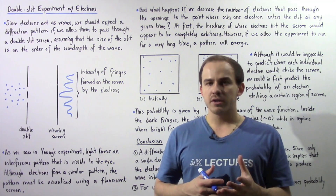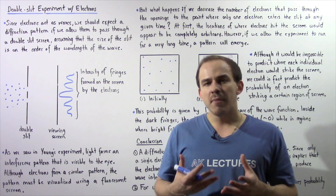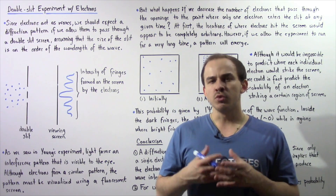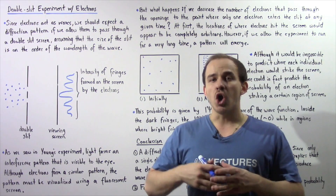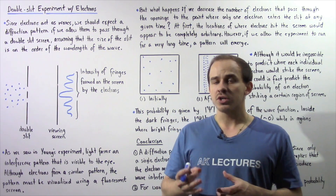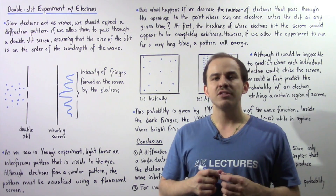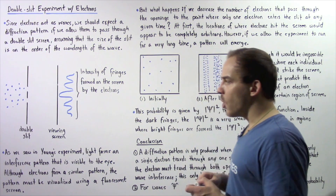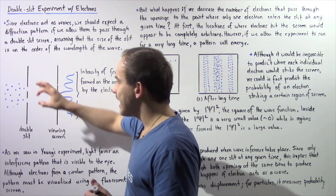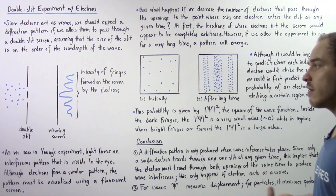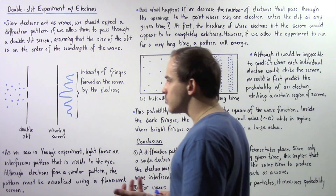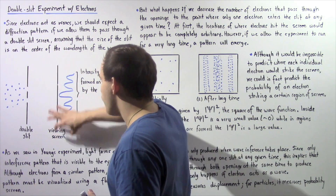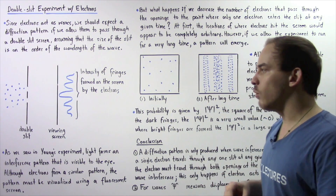Since electrons not only act as particles but can also act as waves, we might expect a diffraction pattern to be formed when electrons flow through a double-slit screen, as long as the size of the slit openings is on the order of the wavelength of the wave produced by those electrons. To see exactly what we mean, let's conduct the following thought experiment. We have a double-slit screen where each opening is on the order of the electron's wavelength, and we allow electrons to flow through the two openings, eventually forming a diffraction pattern on a viewing screen.